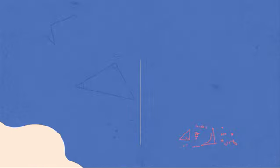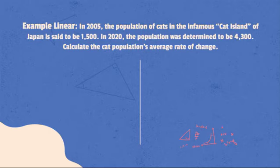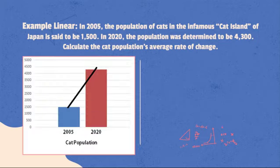Let's try a real-life situation where linear equation can be applied, using the example earlier. But this time, we have to calculate the cat population's average rate of change. Using the given values from the problem statement, we can come up with the graph as shown in the image. The black line from 2005 to 2020 shows the slope of the line which is actually the average rate of change of the cat's population.